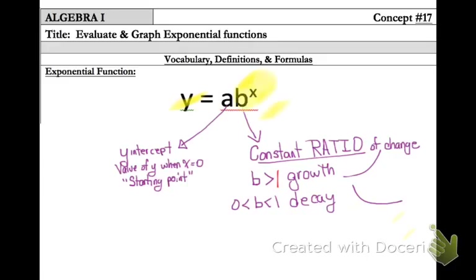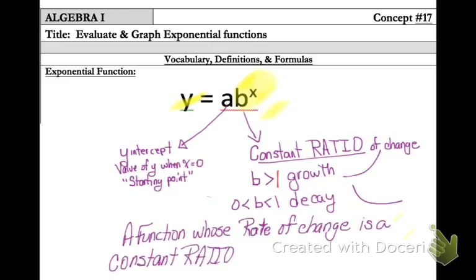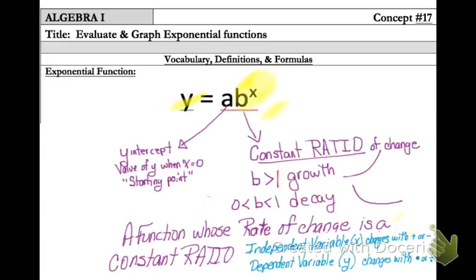In your notes, highlight that x is the exponent — that is what makes an exponential function exponential. When you write it out, if it has an x in the exponent, you know it's an exponential function. So, an exponential function is a function whose rate of change is a constant ratio, and that means that your y values are going up by multiplication or down by division.